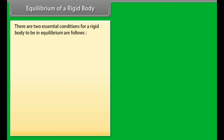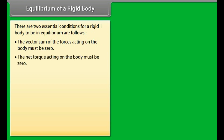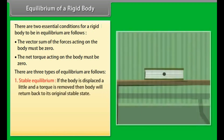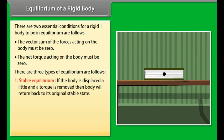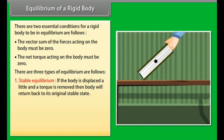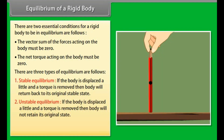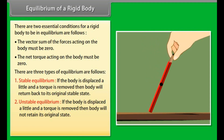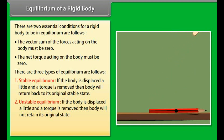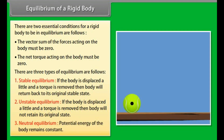For a rigid body to be in equilibrium, two conditions must be met: the vector sum of forces acting on the body must be zero, and the net torque acting on the body must be zero. There are three types of equilibrium: (1) Stable equilibrium — if displaced and torque removed, the body returns to its original state; (2) Unstable equilibrium — the body does not return to its original state; (3) Neutral equilibrium — potential energy of the body remains constant.